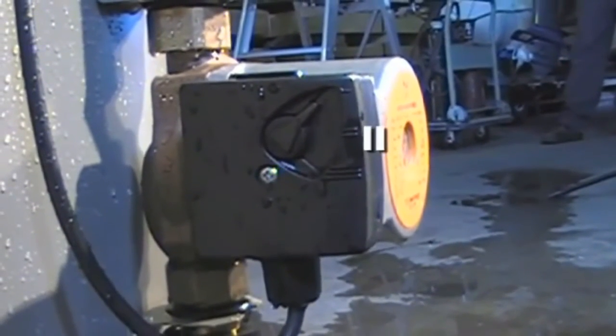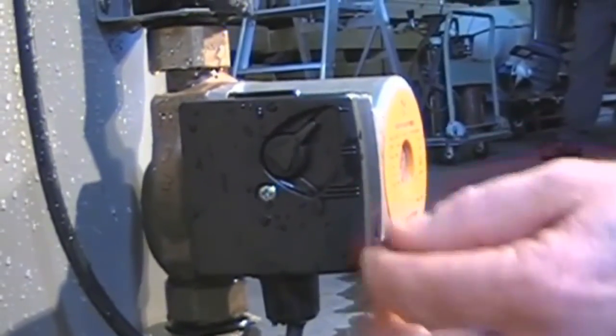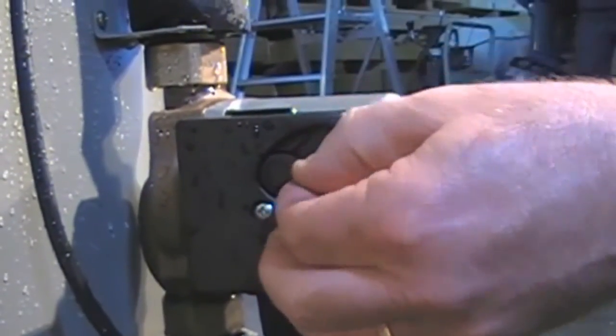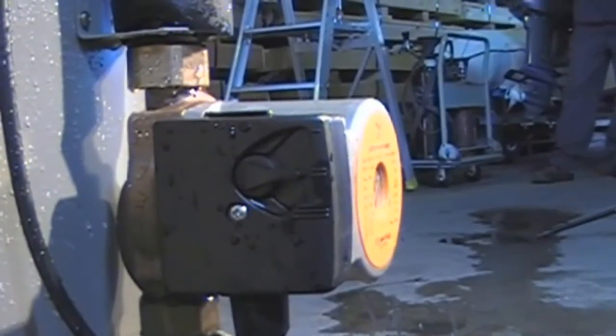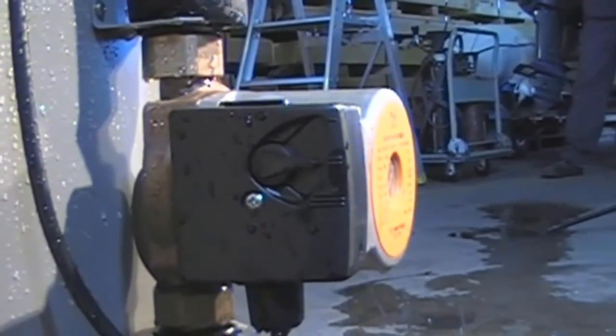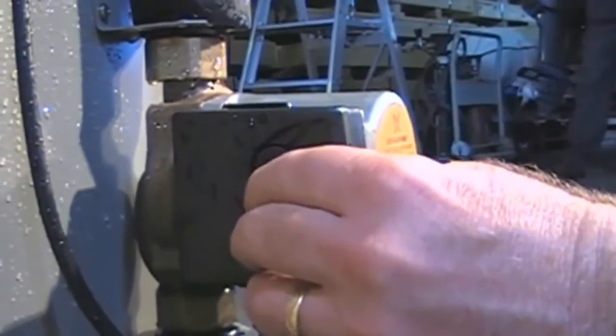Set the pump speed to 1, 2, or 3. Start at 1 and then work up to a higher number. Do not start on a higher number first and work down for maximum power saving. Normally, 1 or 2 are for higher ceilings and 3 is for high pitched roofs.